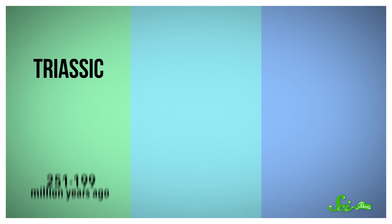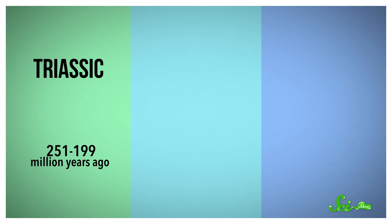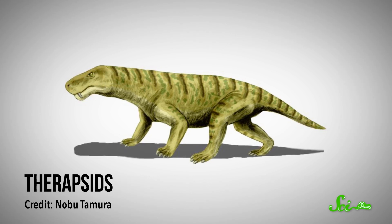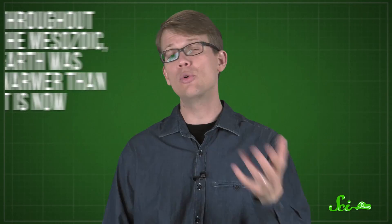Like other eras, the Mesozoic is divided into periods — in this case, three of them. The first period, the Triassic, lasted from 251 to 199 million years ago. It was a time of transition, when the dominant vertebrates of the late Paleozoic, the Therapsids, pretty much disappeared. A new group of reptiles, the dinosaurs, then rose to become the Earth's new dominant land vertebrates.